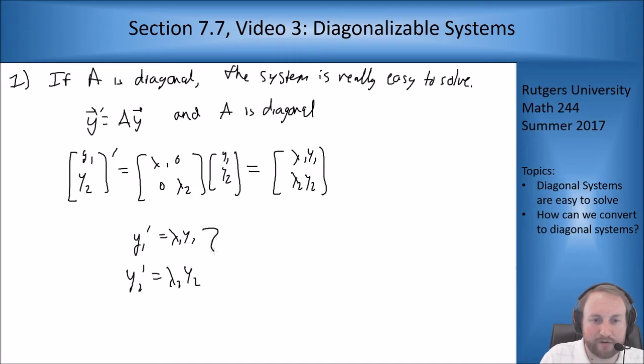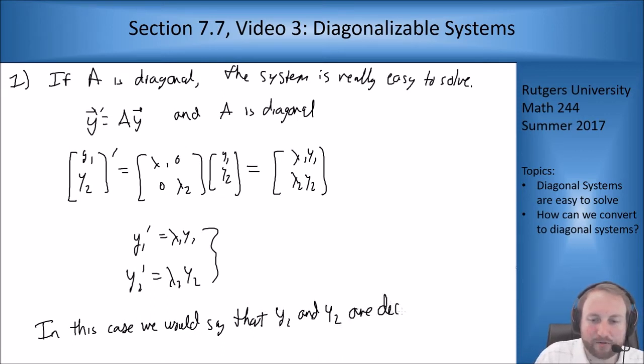Well, you know how to solve both of these. These are really easy. These are just first order linear ODEs, just one equation, not a system anymore, that you can solve. There's a physics term for this: we would say that y1 and y2 are decoupled. By decoupled, we mean they really don't depend on each other, only on themselves, so we can solve them individually then put them back together. These are really easy to solve.